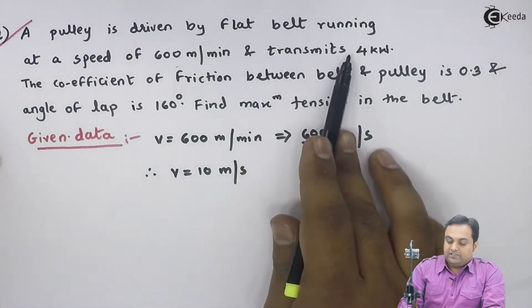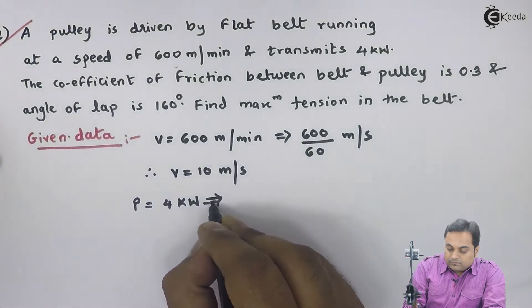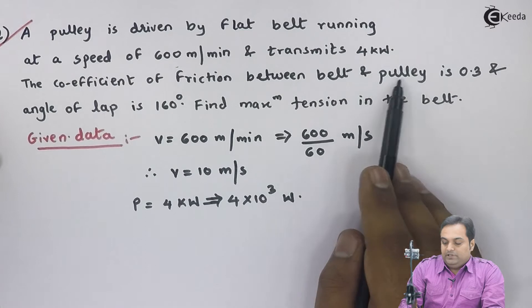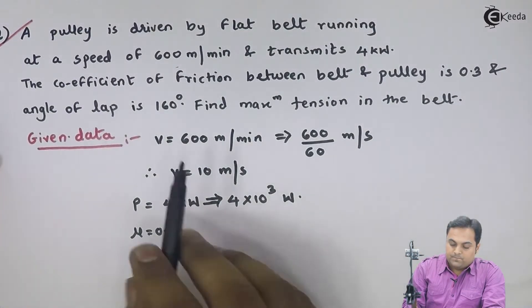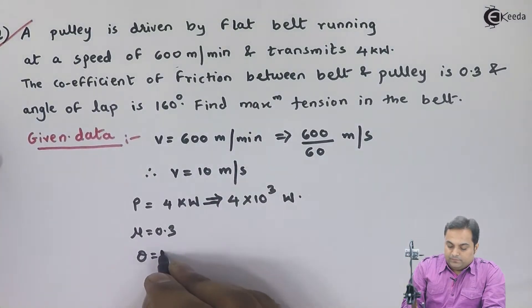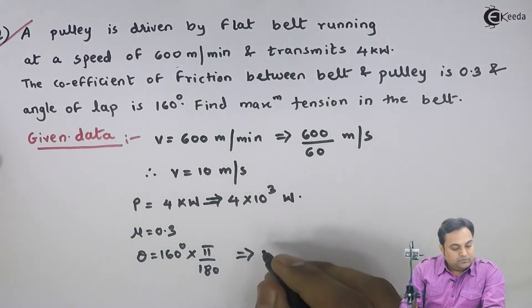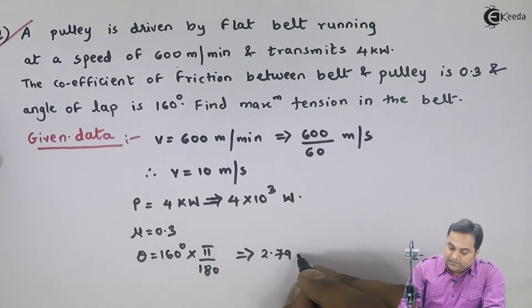Now, it transmits 4 kilowatts. The coefficient of friction between the belt and pulley is 0.3 and angle of lap is 160 degrees. I'll convert it into radians. This comes out to be 2.79 radians.